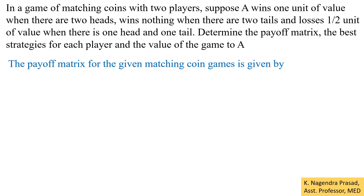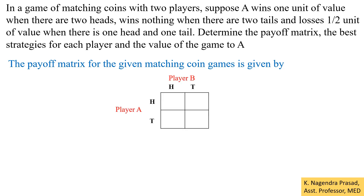Let's see the solution. First, draw a payoff matrix for the given game. Here let us consider head and tail for player A, and similarly head and tail for player B. From player A's point of view, player A wins one unit of value when there are two heads — one head for player A and one head for player B — so here we enter the value one.